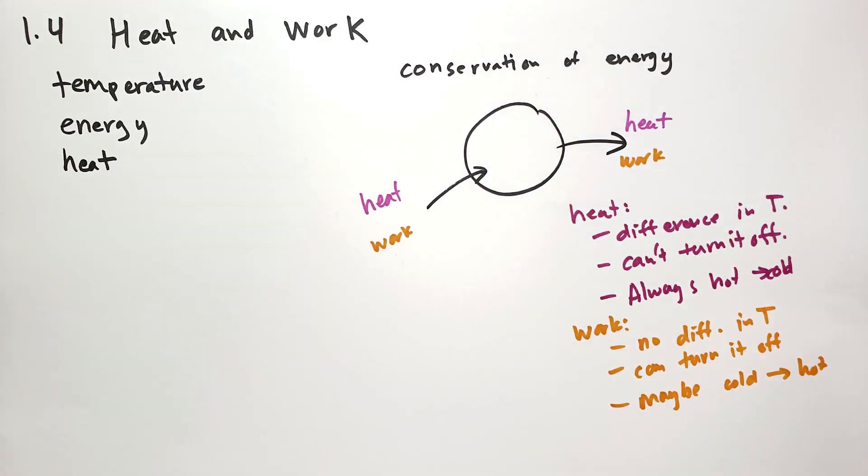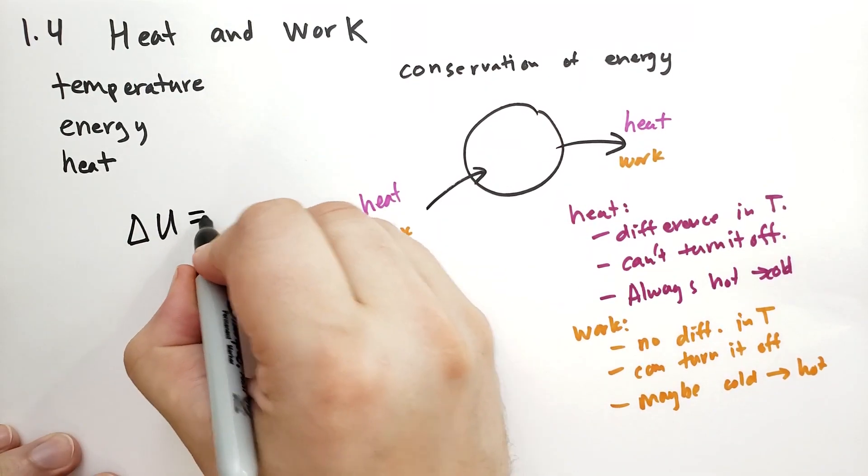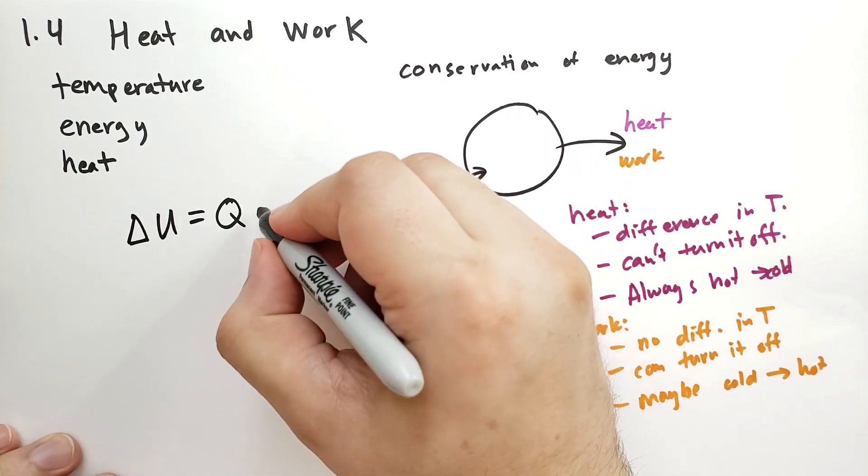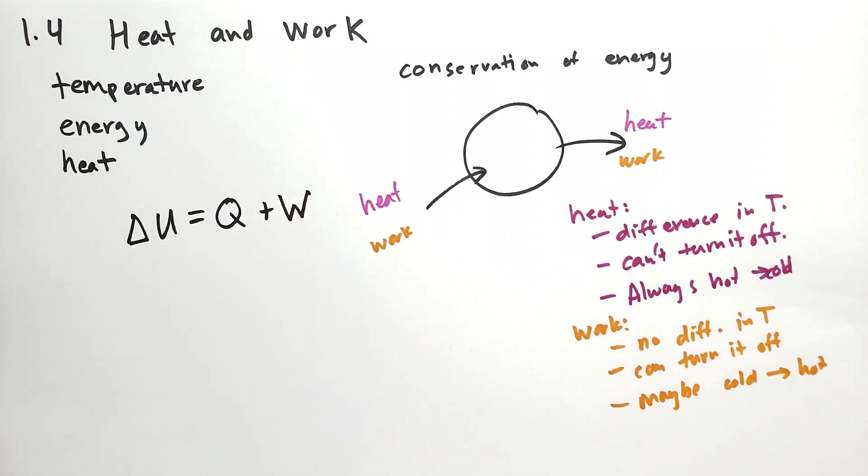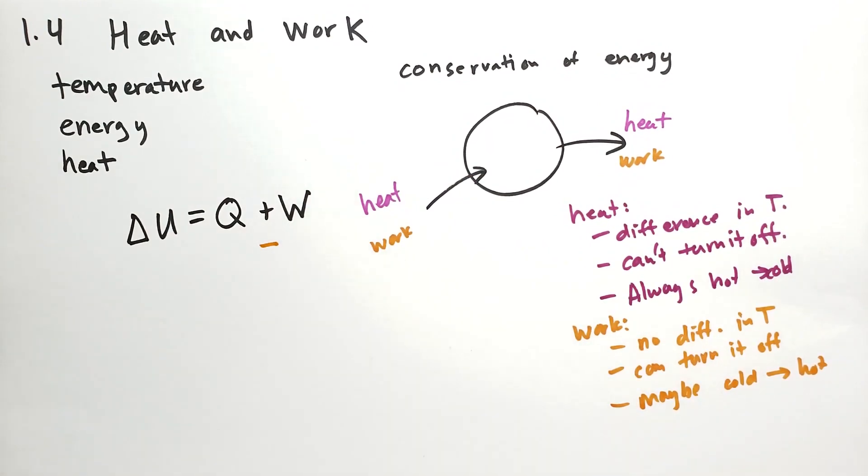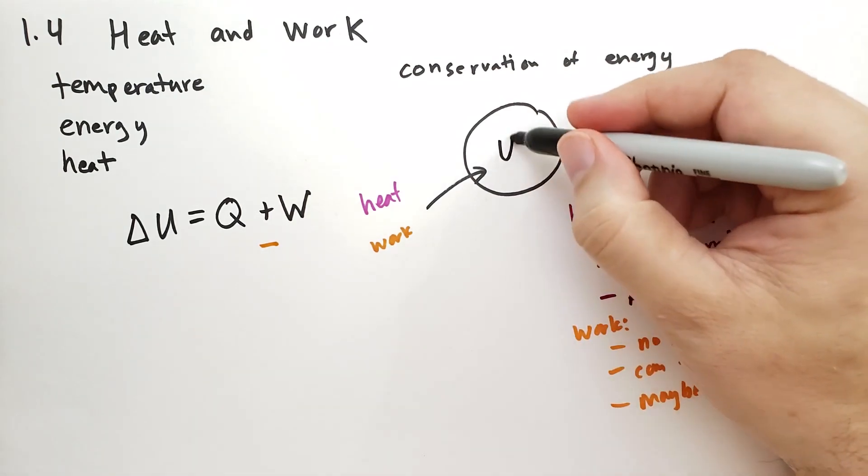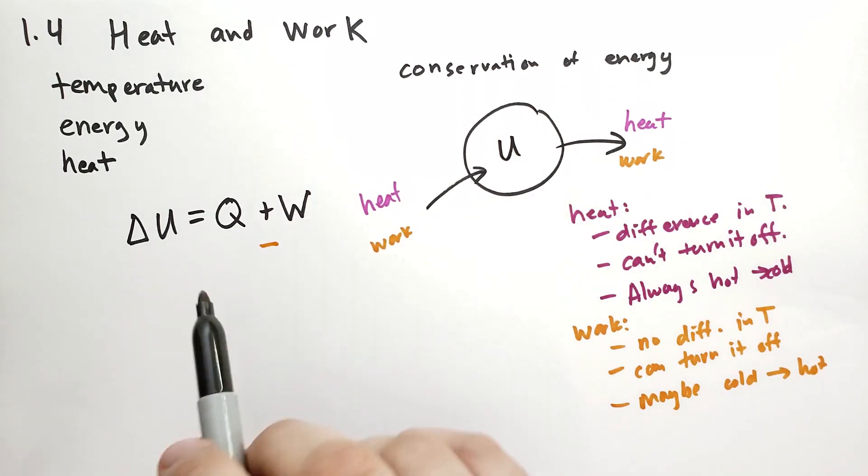And today we understand that the conservation of energy says that the change in the internal energy of a system is always equal to the amount of heat that's been added and the amount of work that's been added. Now, I should note that in some textbooks, they use a minus sign here for the work. We're going to use a plus sign in here. So work is the energy added to the system. So we have some internal energy here. U would represent the total internal energy. But rarely do we ever talk about the total internal energy. We're only interested in how the energy flows or changes over time. So Q is the heat.